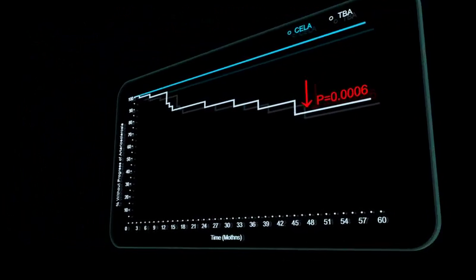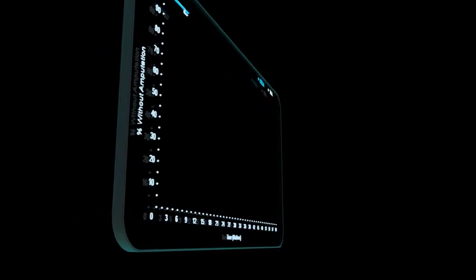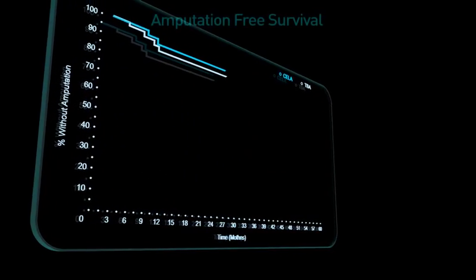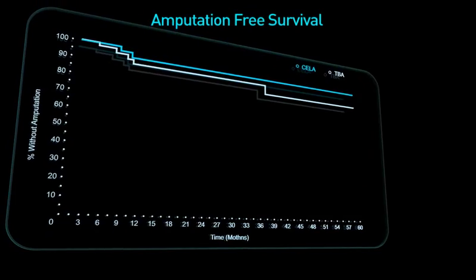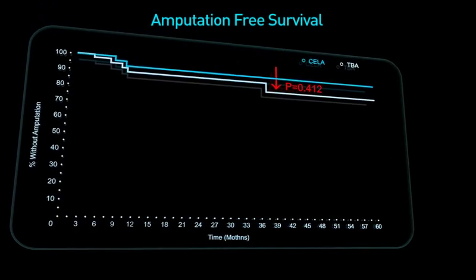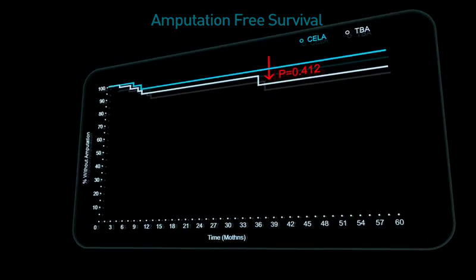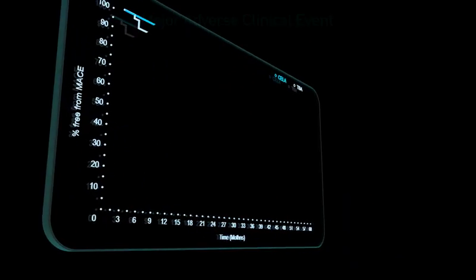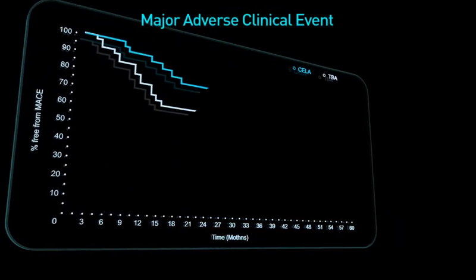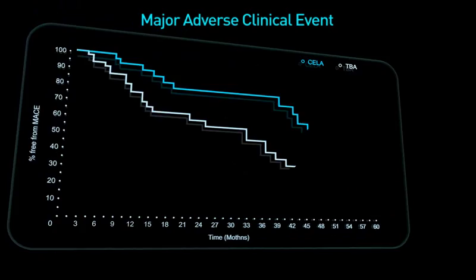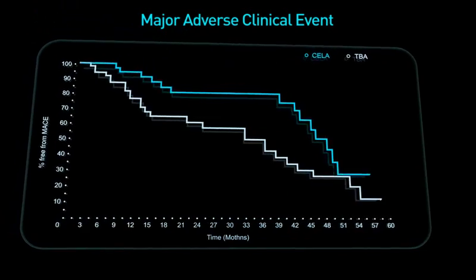There was no difference in amputation-free survival: 95% for laser vs. 89% for TBA. Major adverse clinical events at 5 years were significantly more pronounced in TBA at 38% vs. 66%.